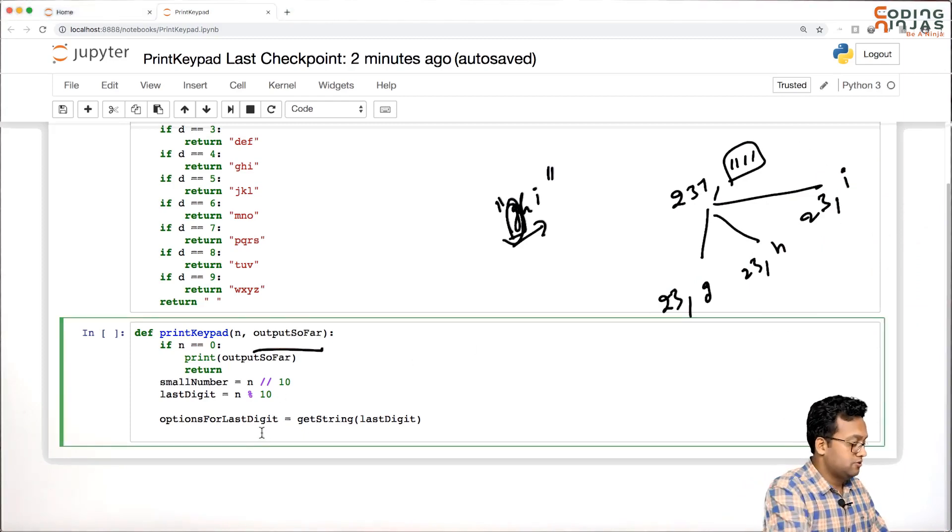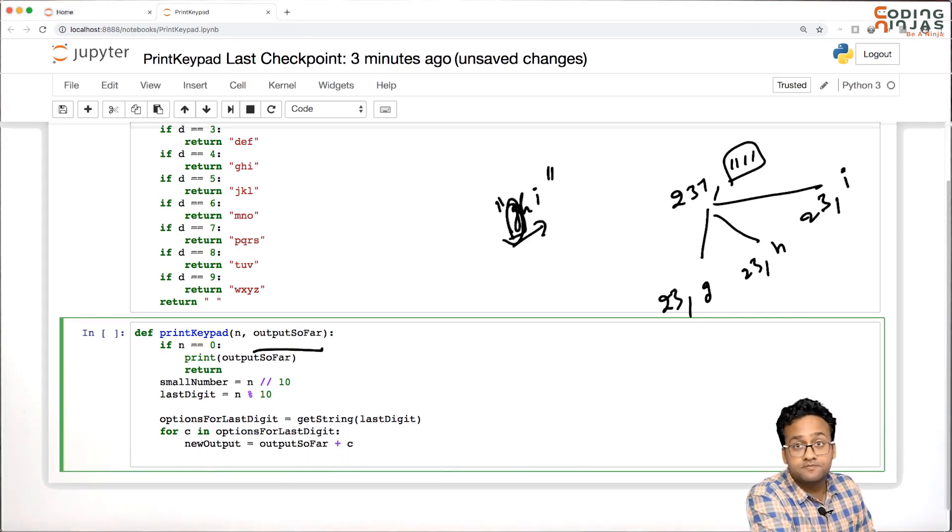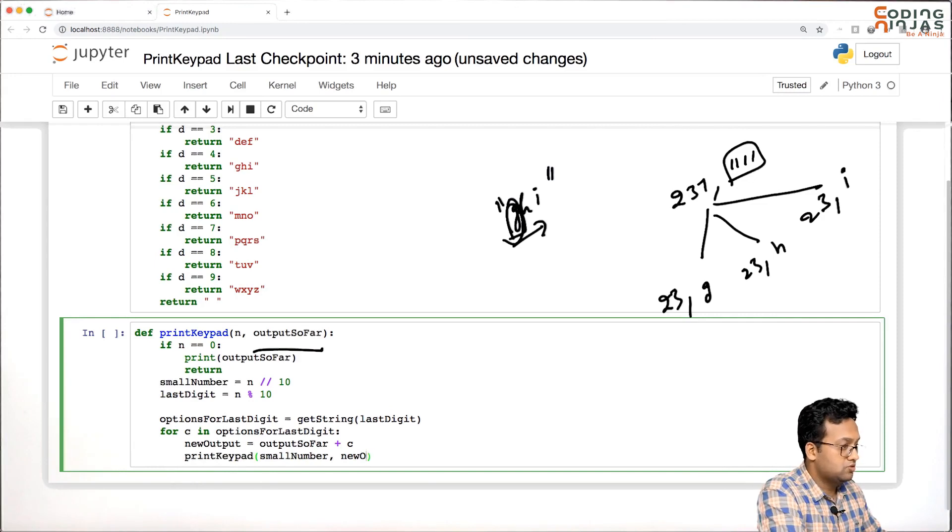For c in options for last digit, what we need to do is our new output equals output so far plus c. I'm looping over 'ghi', so my first option is g, second is h, third is i. I'm creating the new output corresponding to each of them, and I'll simply call print_keypad on small number with this new output.